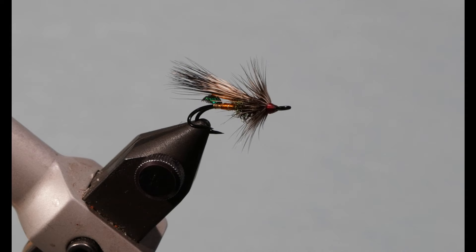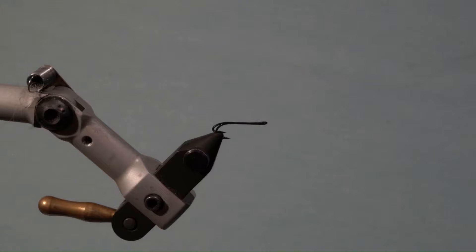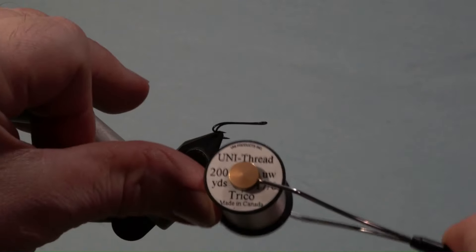Hi there. Today I'm going to tie a rusty rat, an Atlantic salmon hair wing tied on the Partridge double hook size 12. The thread I'm using is the Uni-Thread Tricot 17-0 white.